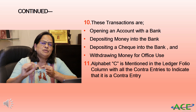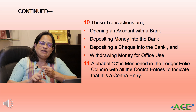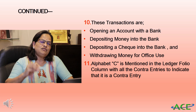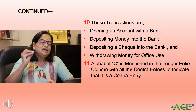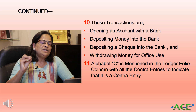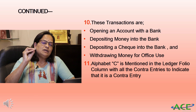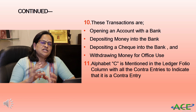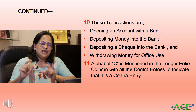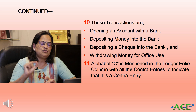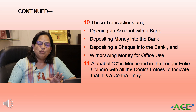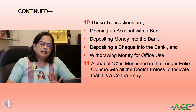Depositing a check is like cash deposited in the bank — it also affects cash in hand and cash at bank. Withdrawing money for personal use is called drawings, so contra entry applies specifically to withdrawing money for office use. When entering a contra entry, capital letter 'C' is mentioned in the ledger folio column, meaning the entry will appear on both the cash side and the bank side — on both debit and credit sides.